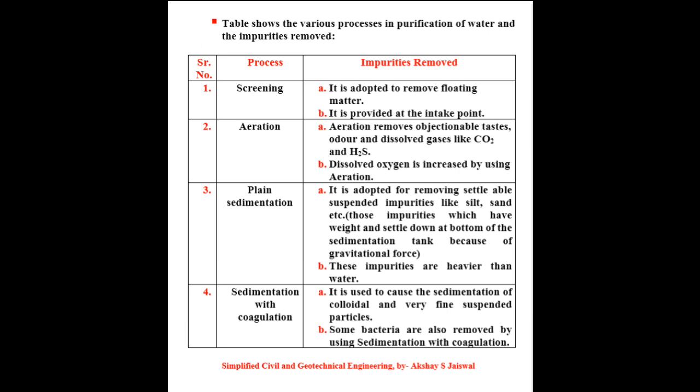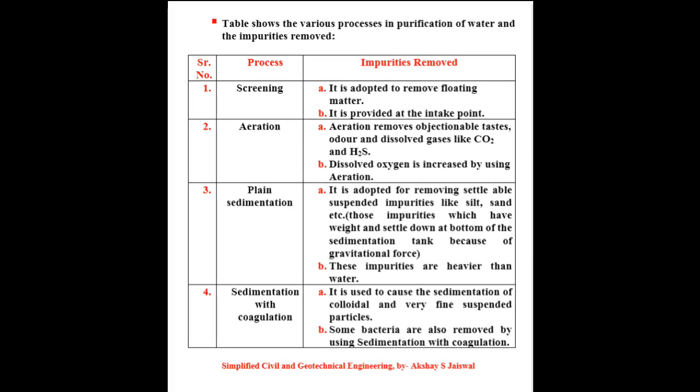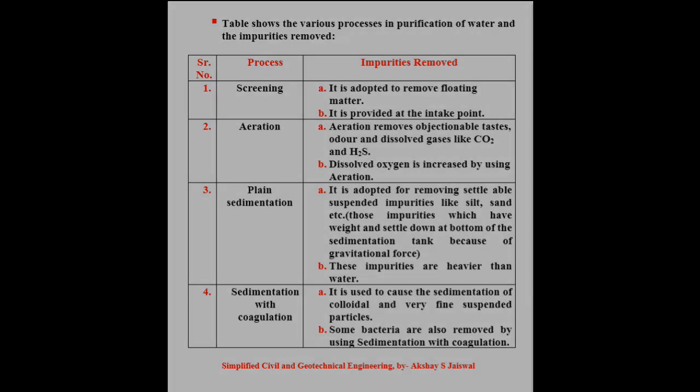The third process is plain sedimentation — it is adopted for removing settleable suspended impurities like silt and sand. Suspended impurities are those which have weight and settle down at the bottom of the sedimentation tank because of gravitational force; these impurities are heavier than water. The fourth process is sedimentation with coagulation — it is used to cause the sedimentation of colloidal and very fine suspended particles; some bacteria are also removed by using sedimentation with coagulation.